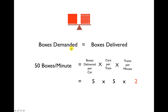Let's look at that more mathematically. On the left is the boxes demanded, on the right is the boxes delivered — and you can see these are equal. We demanded 50 boxes a minute. Each car delivered five boxes, there are five cars per train, so that's 25 per train load — actually each train load delivered 50 boxes total. That means we needed two trains per minute in order to come up with the demand of 50 boxes a minute.